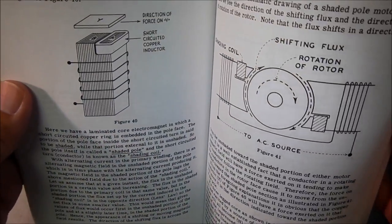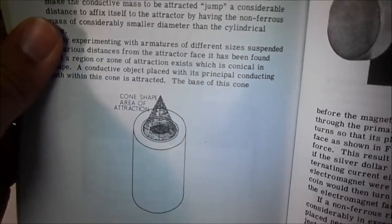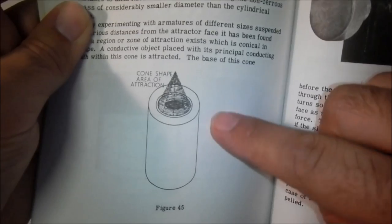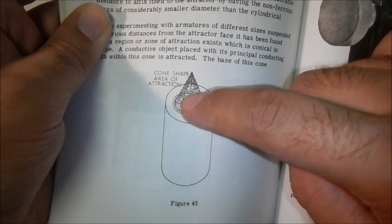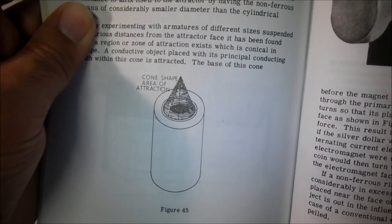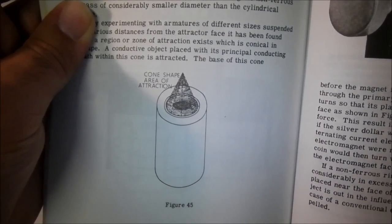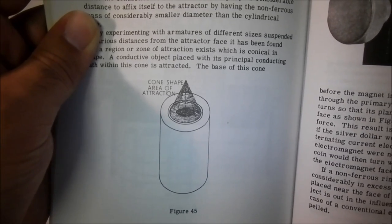He goes over the theory of operation and describes there being a region in the center of the solenoid. He calls it a cone-shaped area of attraction. So that would be the area where your non-ferrous metals, copper and aluminum, would be pulled in by the electromagnet.